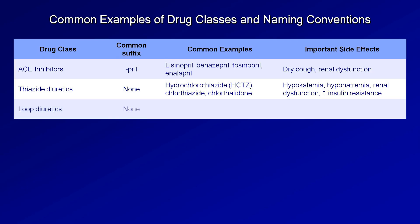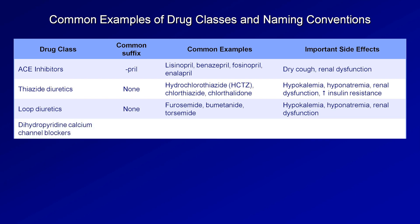Loop diuretics have no common suffix, but there are very few in number. In the US, they are essentially just furosemide, bumetanide, and torsemide. Side effects are similar to the thiazides, except insulin resistance is not present with loop diuretics. Dihydropyridine calcium channel blockers all end in -dipine, such as amlodipine, felodipine, nicardipine, and nifedipine. Common side effects are constipation and lower extremity edema.